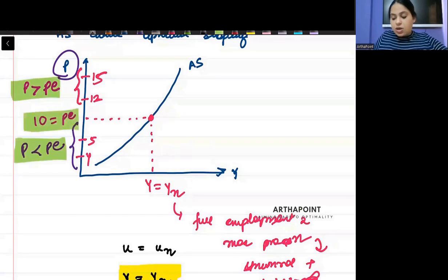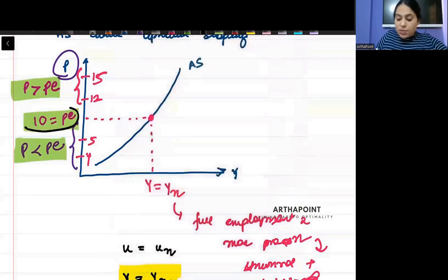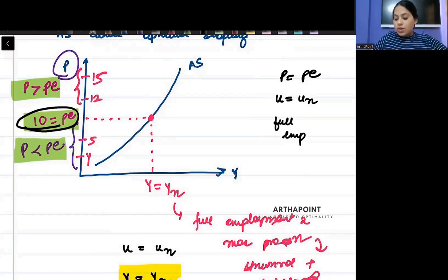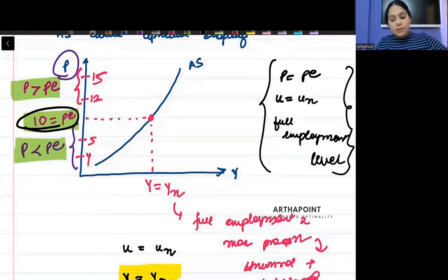But actual price can be greater than the expectation. Actual price can be less than expected price. And actual price can be equal to expected price. But when P is equal to PE, when P is equal to PE, because we have studied that U will be equal to UN, you are at natural level of unemployment.